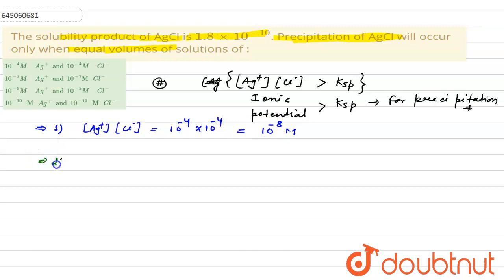Now, for the second solution, it would be equal to 10^-7 multiplied by 10^-7 which means 10^-14.